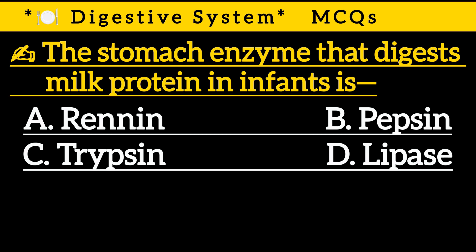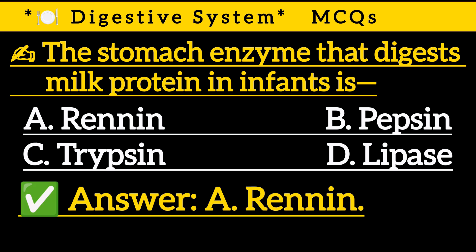Question 23: The stomach enzyme that digests milk protein in infants is — Option A: Renin, Option B: Pepsin, Option C: Trypsin, Option D: Lipase. Correct answer is Option A: Renin.